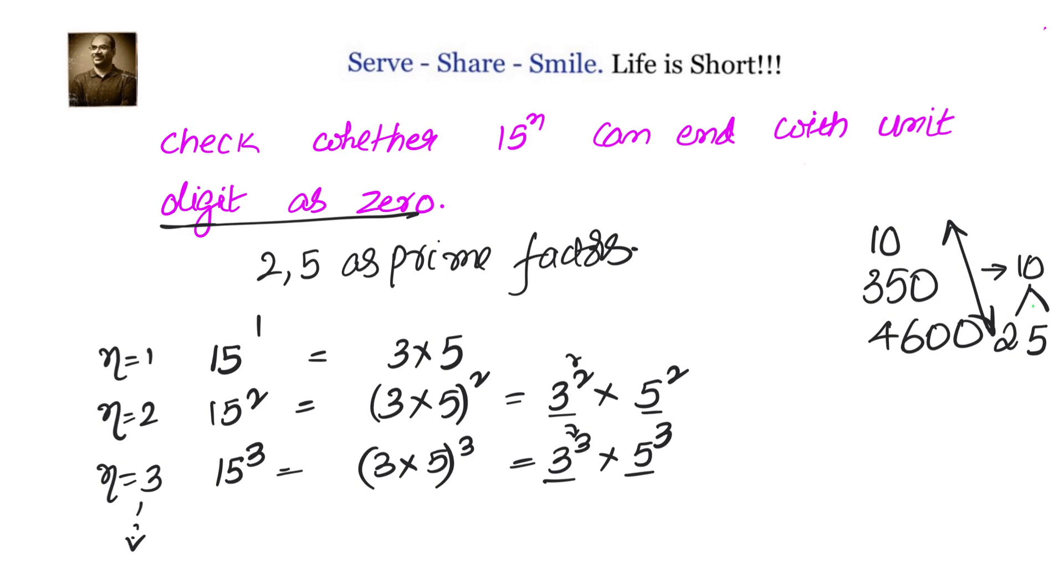Where n belongs to natural numbers. That means the prime factors of 15^n will always be 3 and 5 with different powers. And we know that to end up with unit digit as 0, I should have both 2 and 5 as prime factors. But here we have only 3 and 5—we have 5 but we don't have 2.